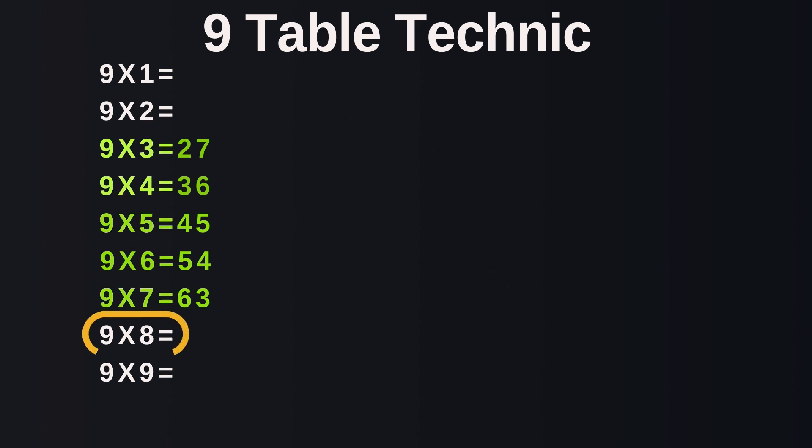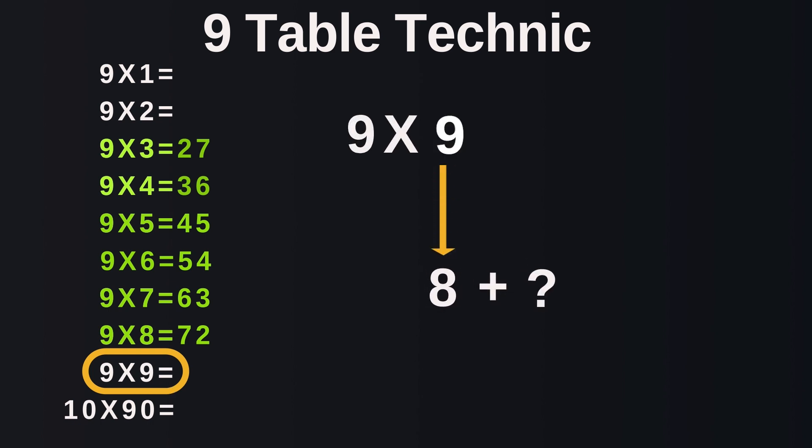Let's give 9 times 8 a go. So the digit directly below 8 is 7, and the digit when added to 7 to get 9 is 2. 7 plus 2 is 9. This makes our answer to 9 times 8, 72. How about 9 times 9? The digit that is directly below 9 is 8, and when added to 8, 1 gives us the result of 9. So our answer to 9 times 9 is 81.